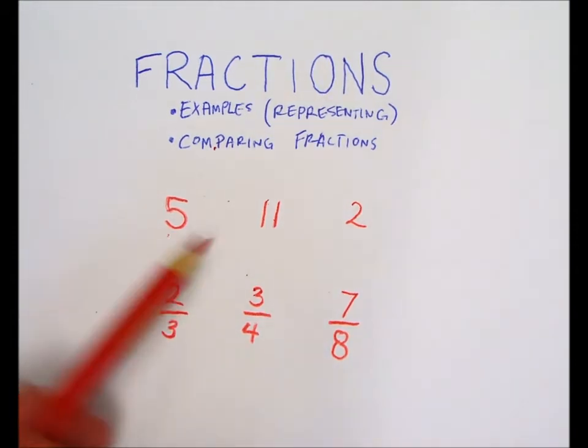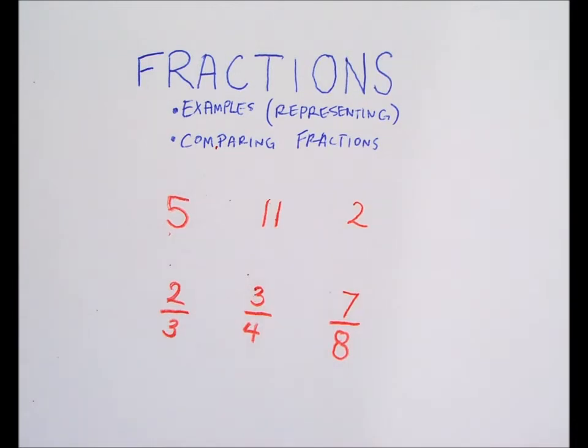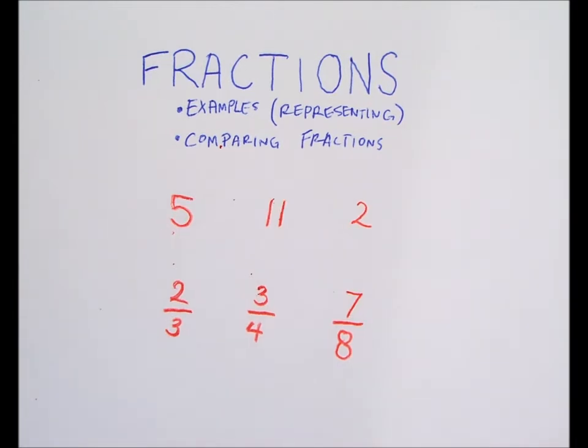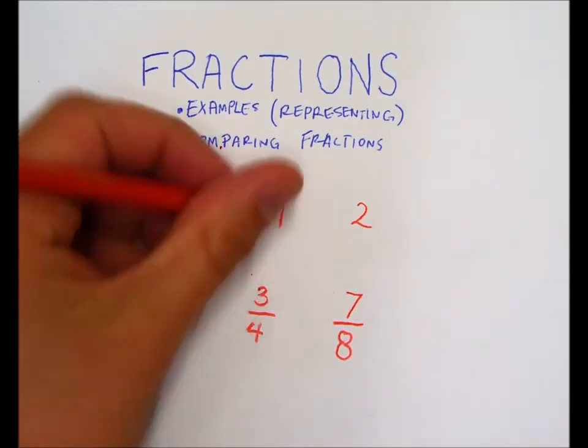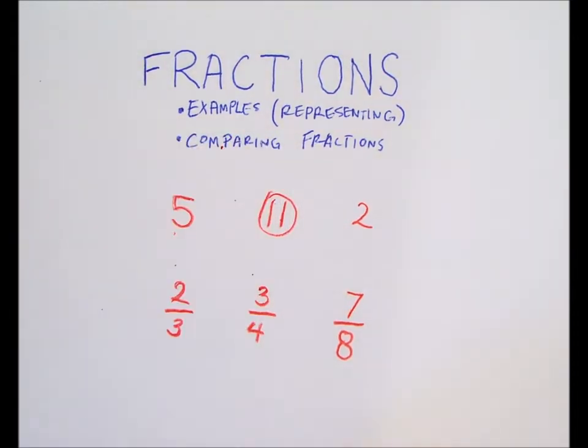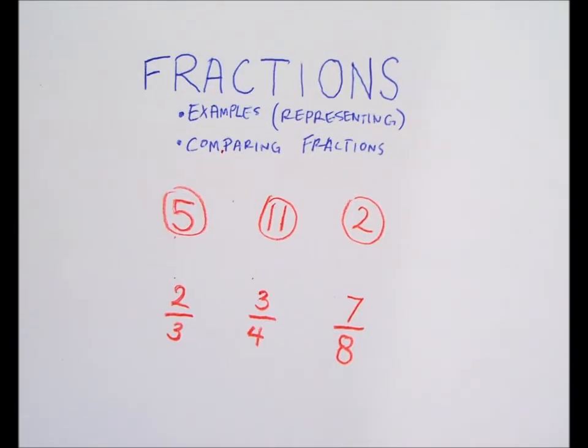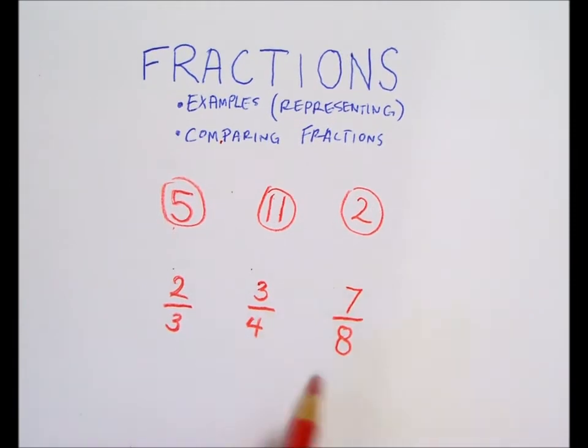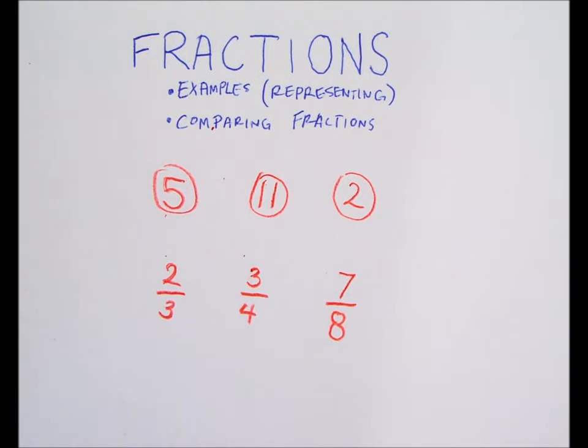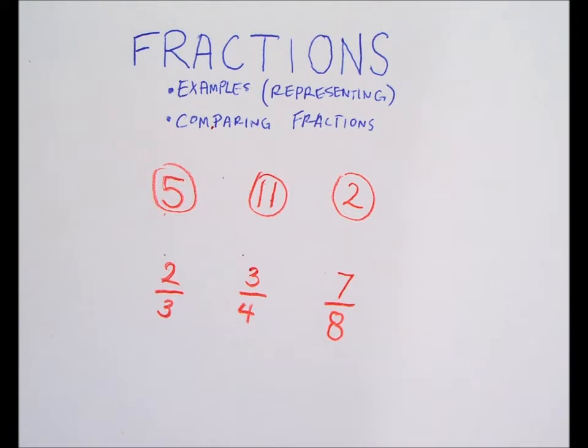When we look at these three whole numbers - 5, 11, and 2 - we can easily say what's the biggest: 11, followed by 5, and 2 is the least. But when we look at these three numbers below - 2/3, 3/4, and 7/8 - which is the biggest? It's difficult to tell. And so for that reason, we need to figure out how we're going to compare these, because at the moment, it's really difficult to see which one's the biggest.